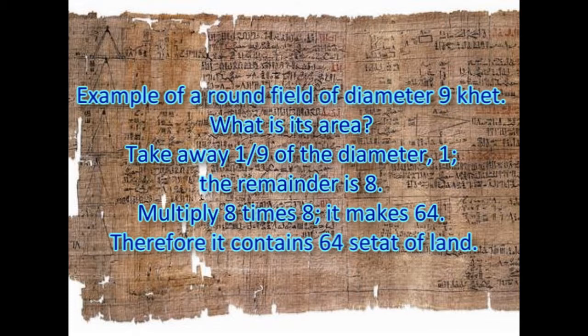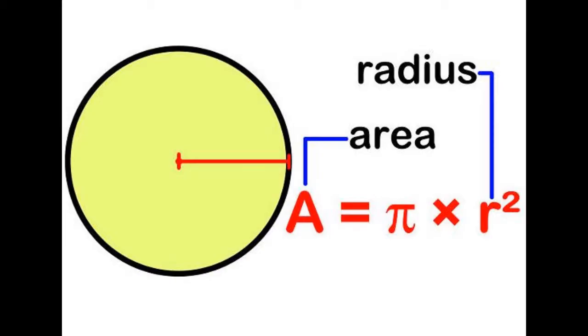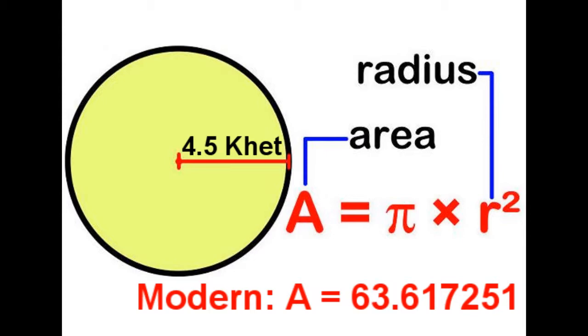Now, this was their way of calculating the area of a circle. And their result was 64, which was a remarkably accurate answer. So we know the area of a circle is pi r squared. So if it's 9 ket, we get the radius as 4.5 ket. And pi r squared is going to be exactly 63.6172512, going on and on. It's an irrational number.